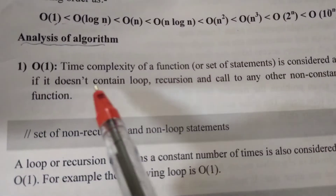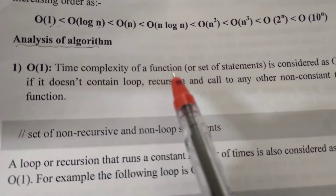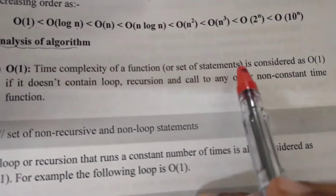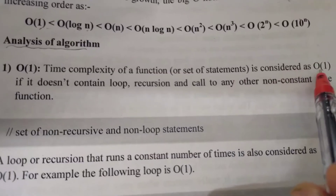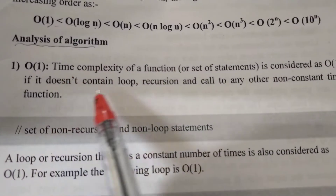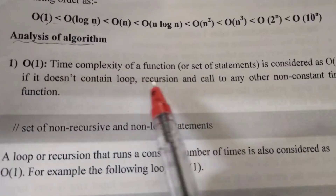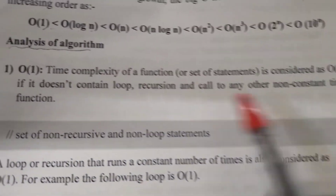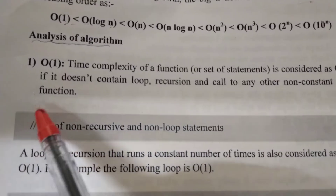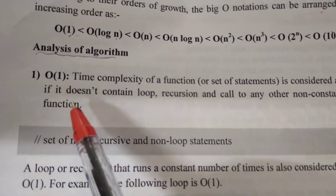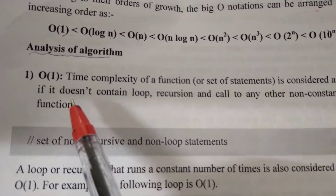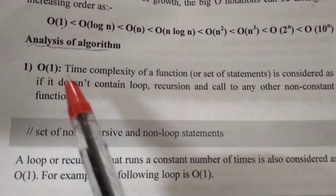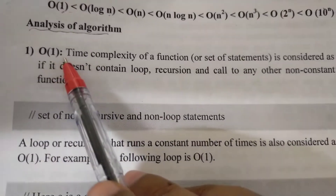The time complexity of a function or set of statements is considered as order of 1 if it does not contain a loop, recursion, or a call to any other non-constant time function. Without loop or recursion, we will see order of 1.